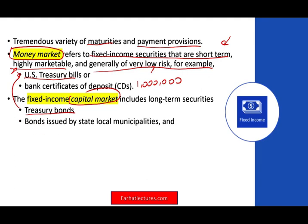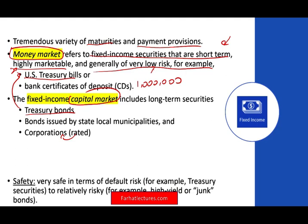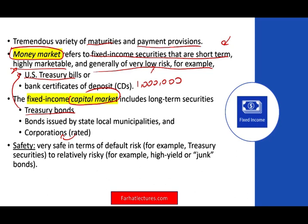We're talking about bonds issued by state and local municipalities — when the state, local government, or county wants to raise money, they issue bonds. We're also talking about corporate bonds. Generally speaking, both corporate bonds and government bonds are rated, meaning they have a level of security. Government bonds are usually more secure than corporate bonds. Within corporate bonds, we're going to have triple-A bonds, double-A, A bonds, and so on.